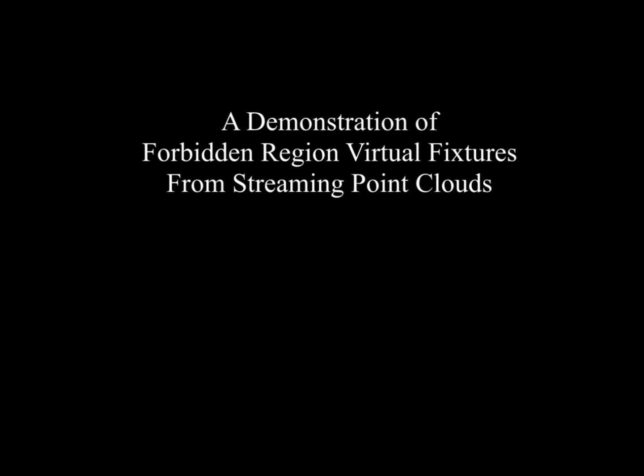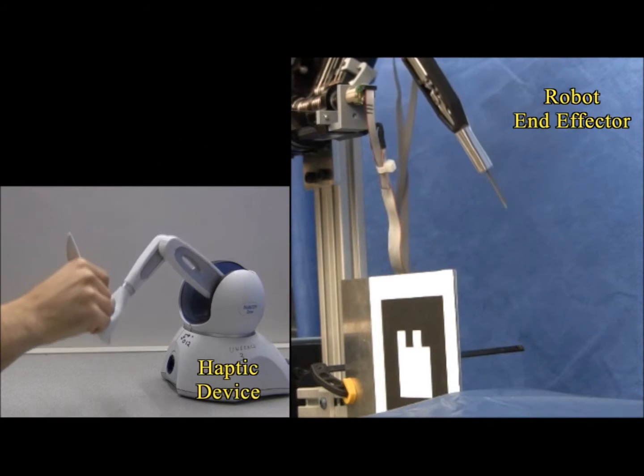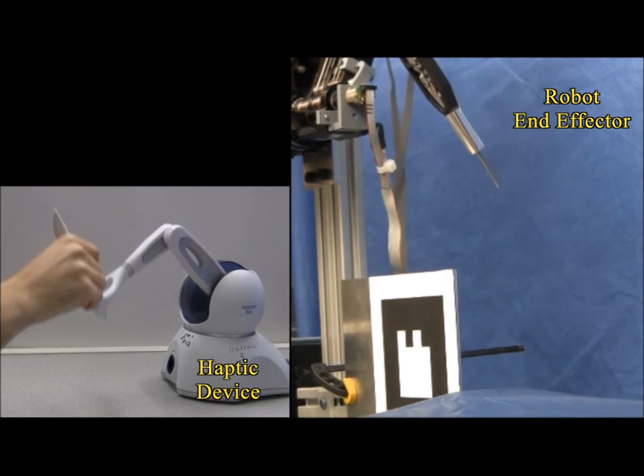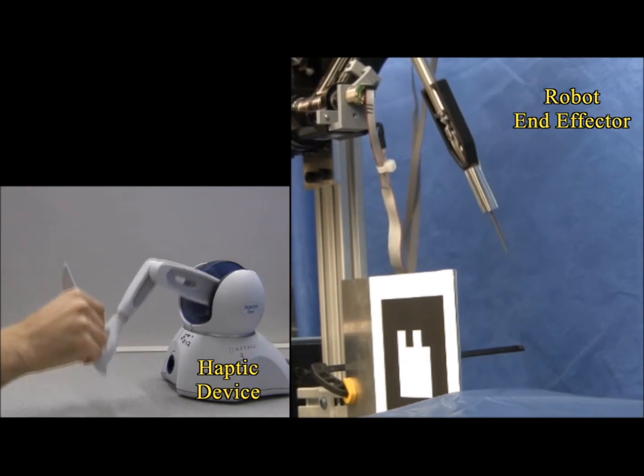This video demonstrates the use of haptic virtual fixtures obtained in real time from depth cameras. The operator moves the device on the left and feels haptic feedback. Simultaneously, he's moving the robot end effector on the right.